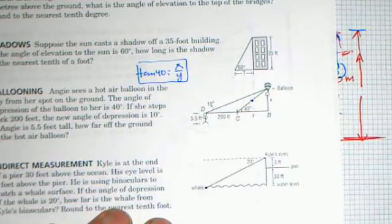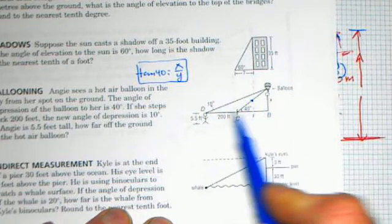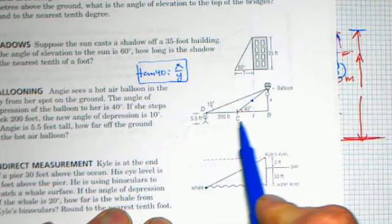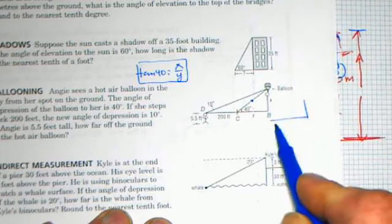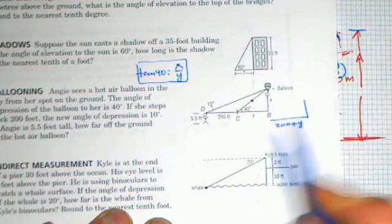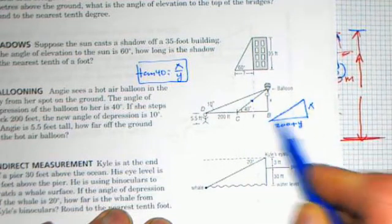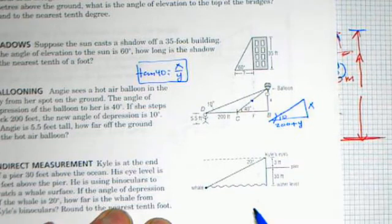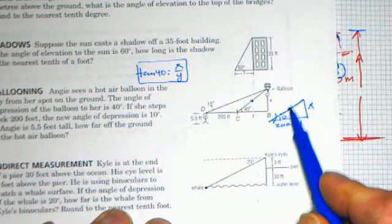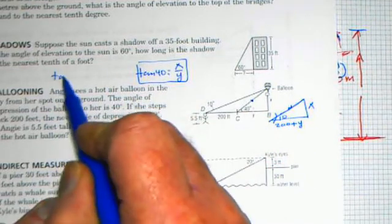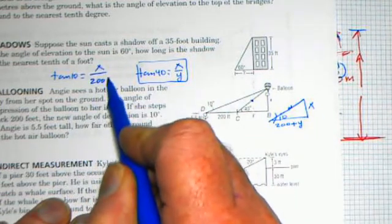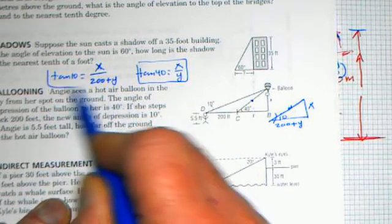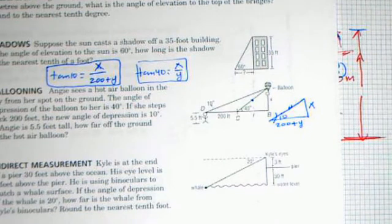That's what we get from the first triangle. For this second larger triangle, where she moves back 200 feet, the base of this triangle is now 200 plus y. So let me sketch that triangle here. Here, this is 200 plus y. The x is still the height of the balloon. And this new angle is 10 degrees. Here's the hypotenuse. This is still a tangent problem. Tan 10 is equal to x over 200 plus y. So that's how we can express the second triangle in terms of the numbers that they give us.